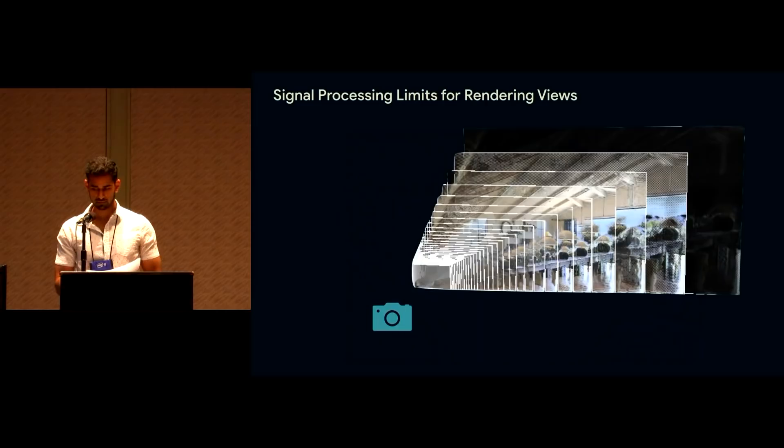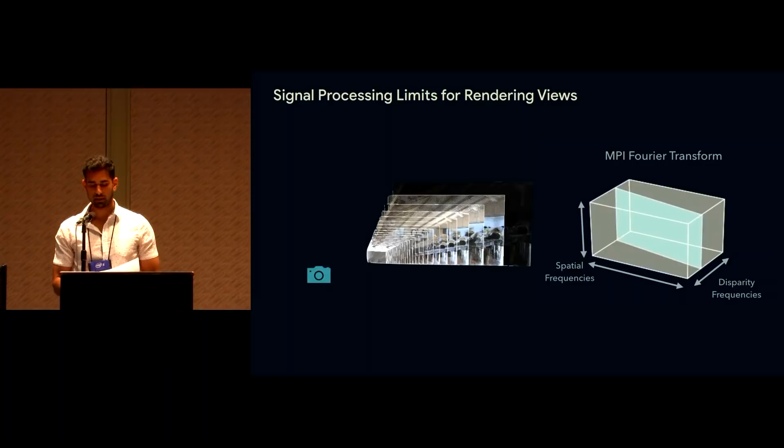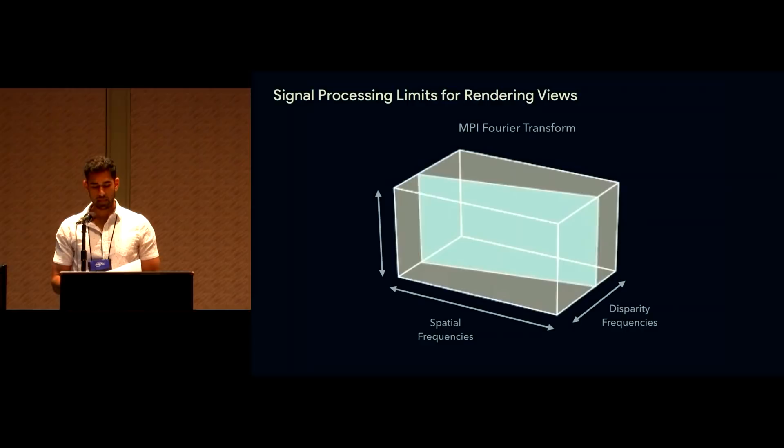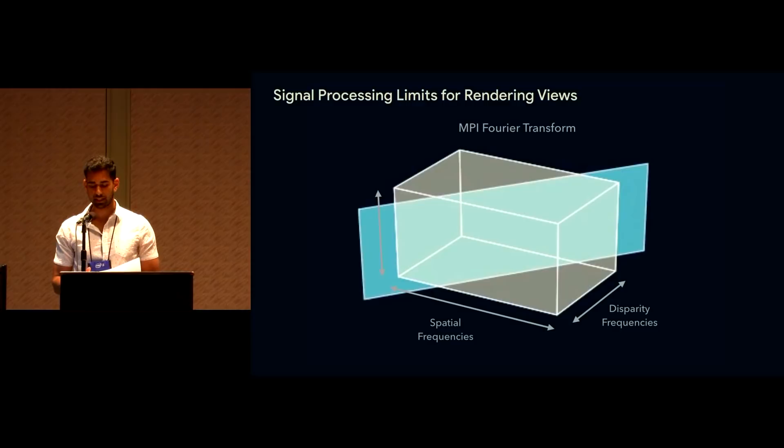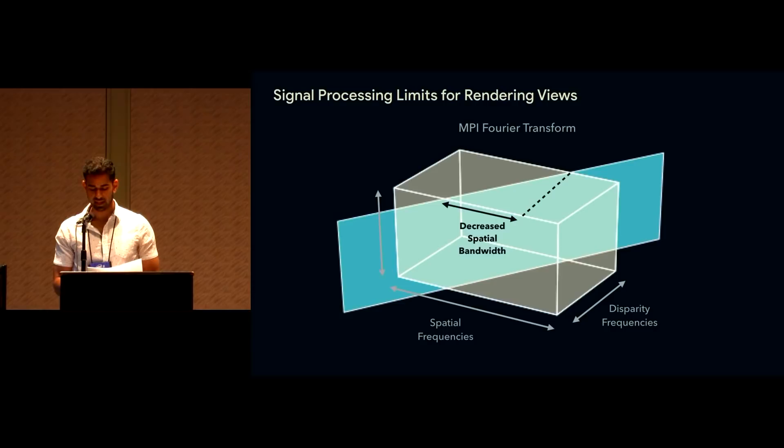We specifically address both issues to allow far greater viewpoint movement than prior work, and here are views rendered by our algorithm for the same scene. So first, let's talk about depth discretization artifacts. We show that there's a limited range of views that can be rendered from an MPI with full spatial resolution. The frequency content of any rendered view lies on a 2D Fourier slice through the 3D Fourier transform of the MPI volume, and further rendered views correspond to steeper slices.